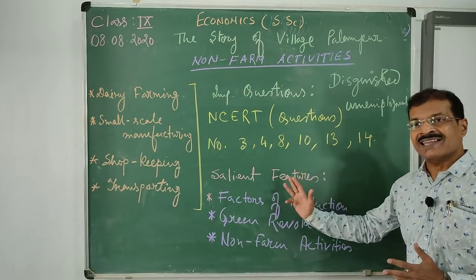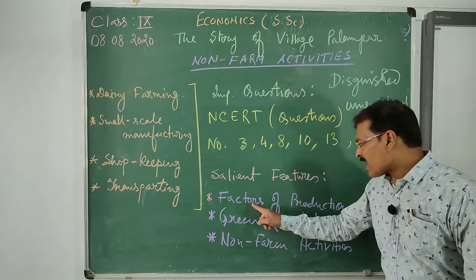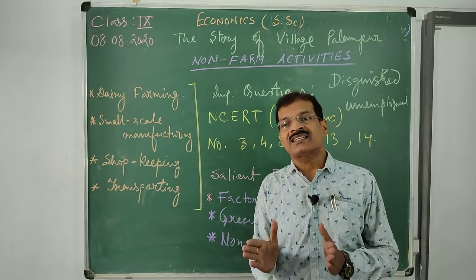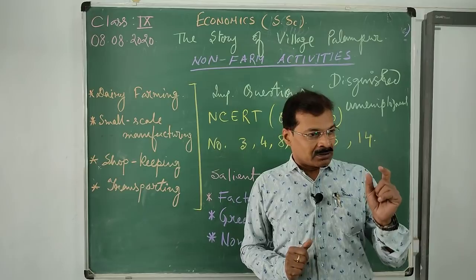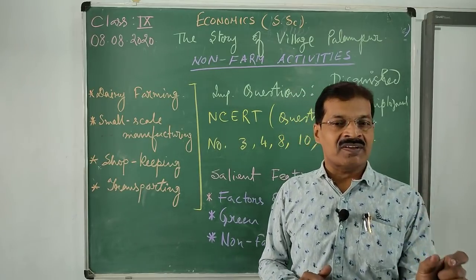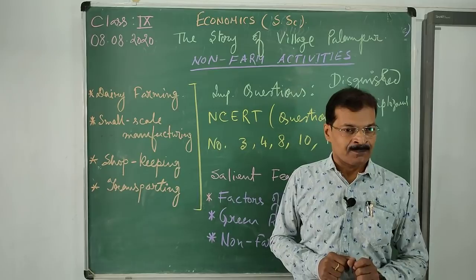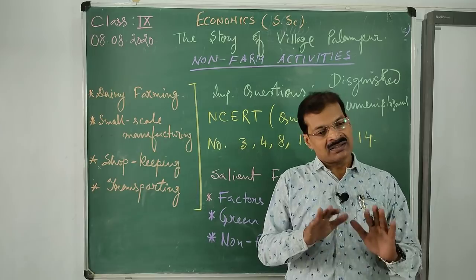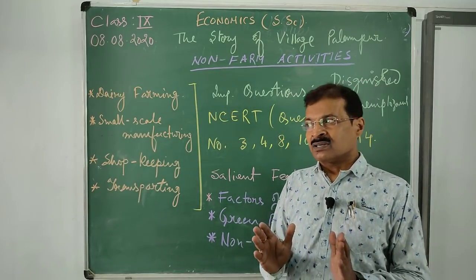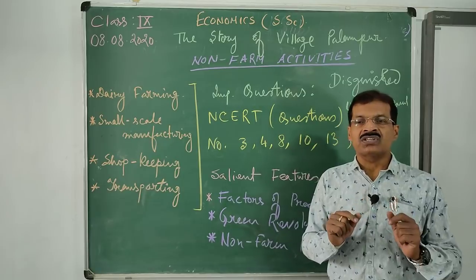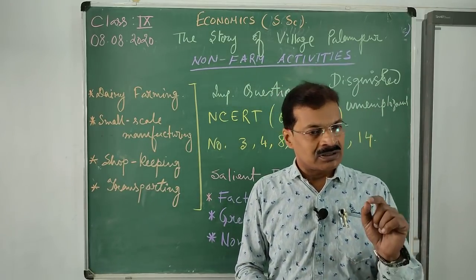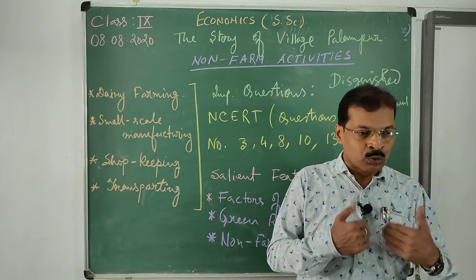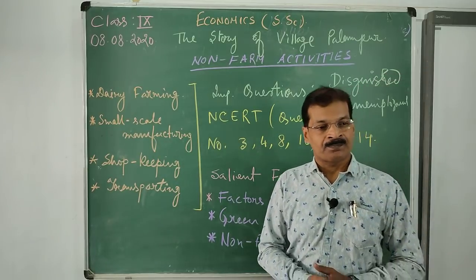The economic structure and economic horizon of the village will be completely changed, and this must be the aim for tomorrow. With this we come to an end of the topic discussion. A small recapitulation: we have three salient features in this chapter. Factors of production - there are four: land, labor, physical capital, and human capital. Land is the surface where economic activity takes place; it comprises the plain surface, under surface, and water surface.